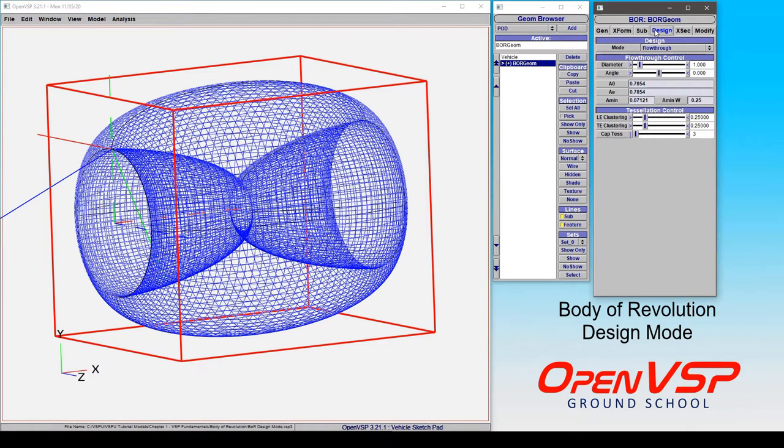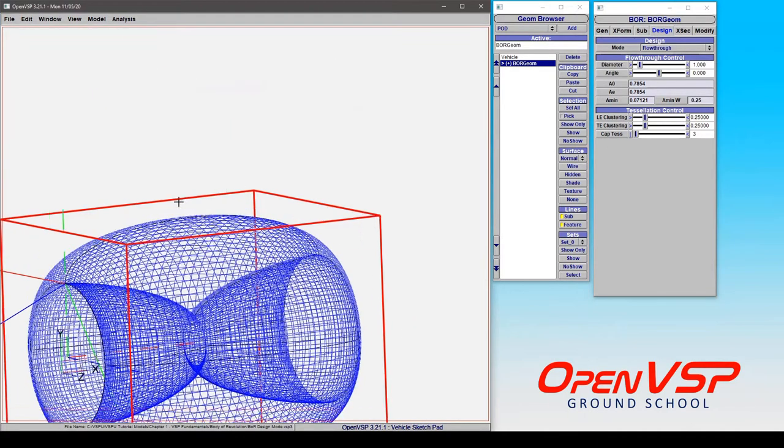We're going to take some time now to talk about the design mode for a body of revolution component and some things to watch out for when we start changing between flow through, upper, and lower design mode. In flow through mode, it assumes that you want a hollow component where you can flow through it, so it's going to use the entire cross section that you give it and rotate it around.